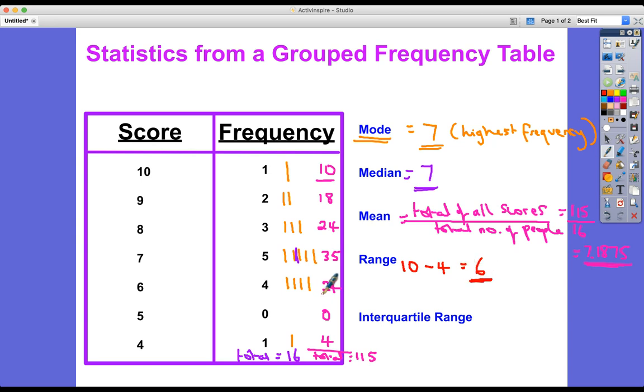And then the interquartile range. Now, these dashes are going to help here, because we've divided it up into two lots of eight to find the middle. Now, if we divide it up into quarters to find the upper quartile and the lower quartile, how many people in each quarter? Well, there's 16. So there'll be four people in each quarter, one, two, three, four, the lower quartile person is going to be here. And the upper quartile person is going to be in this group here.